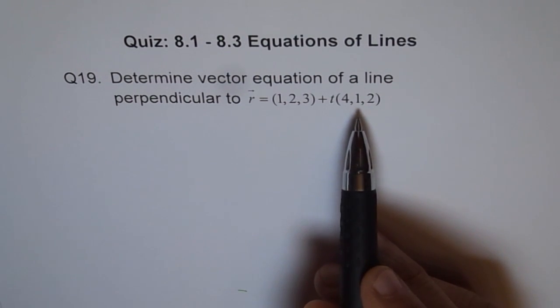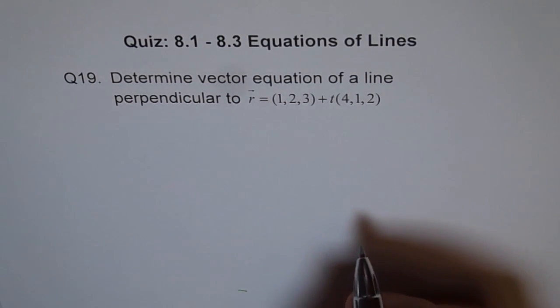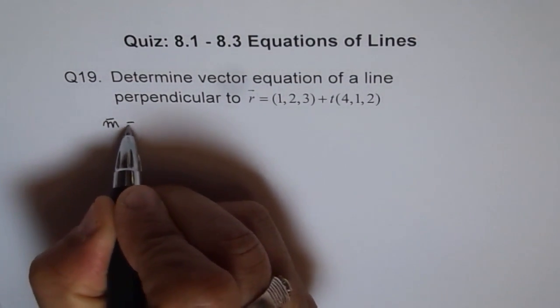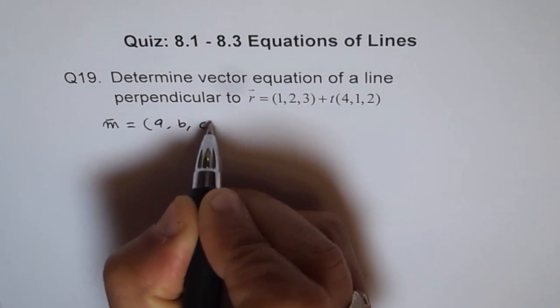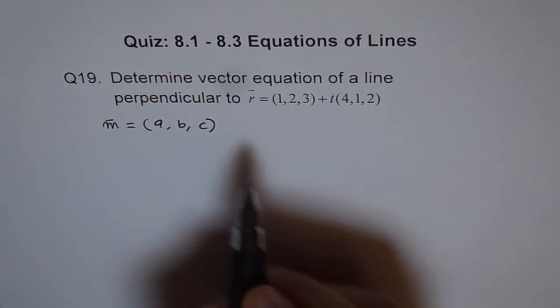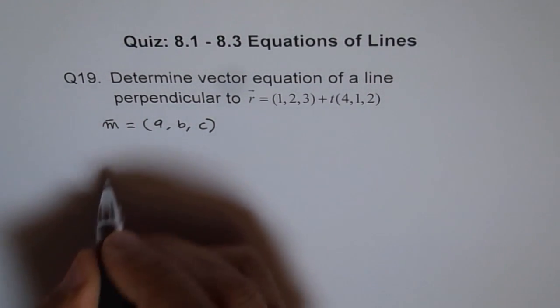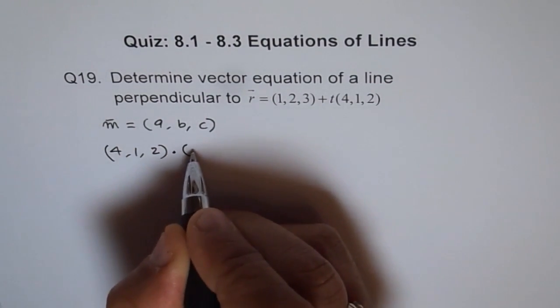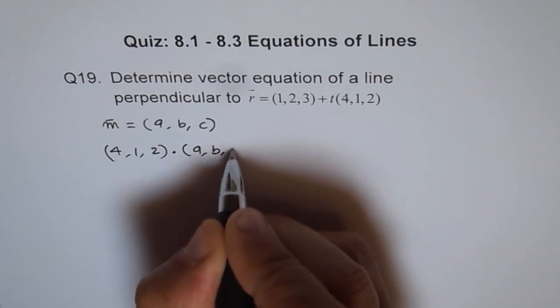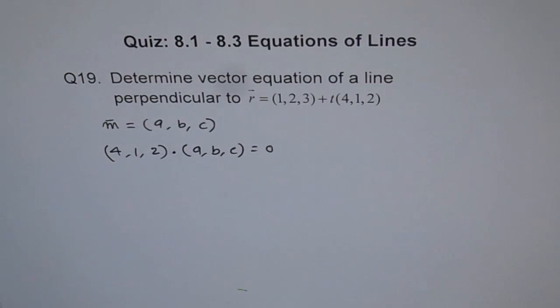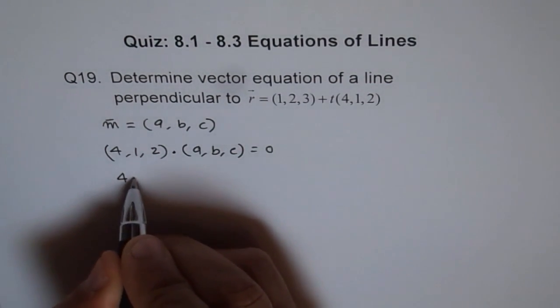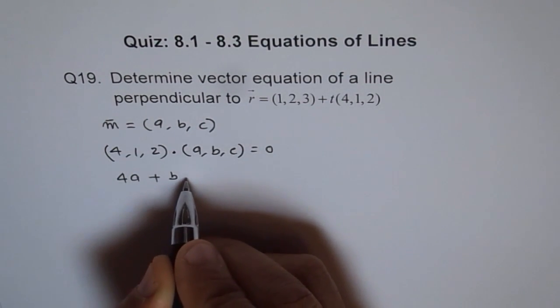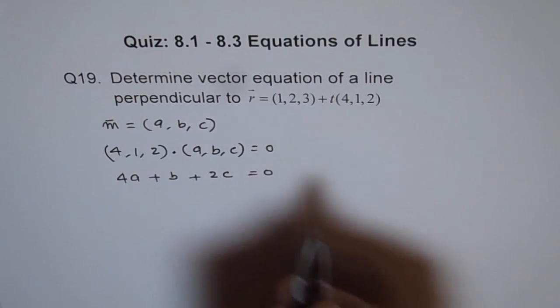Let us assume that the perpendicular line has a direction vector M, which could be written as A, B and C. In that case, dot product of (4, 1, 2) with (A, B, C) should be 0. So it is 4A plus B plus 2C equals to 0.